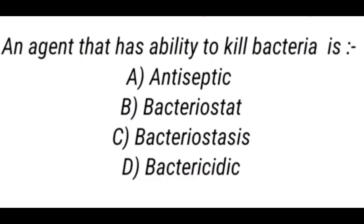The second question from PPMET 23 is: an agent that has the ability to kill bacteria. The options are A — antiseptic, B — bacteriostat, C — bacteriostasis, and D — bacteriacidic. Mostly students गलती करते हैं और antiseptic पर टिक लगा देते हैं, but the answer is D — bacteriacidic, जिसका मतलब है bacteria को kill करना। Bacteriostatic में 'static' का मतलब है agent that prevents growth. So the answer is D — bacteriacidic.